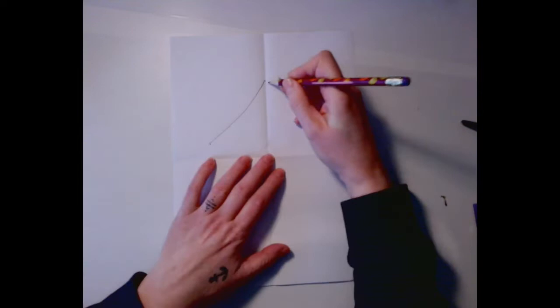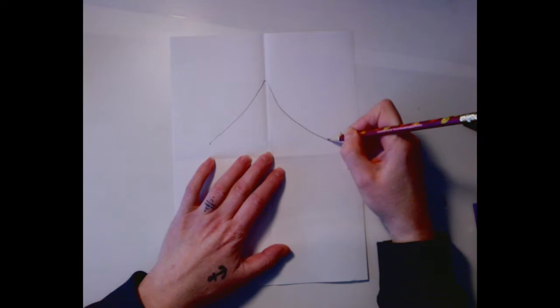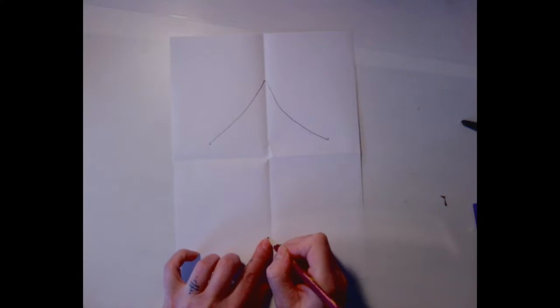Then you're going to draw a swoop from that lower left up to the middle and a swoop down to the lower right. Mine doesn't match but that's okay. Now we're going to put a dot somewhere near the bottom of the page, not too low, just make a little smile down there.